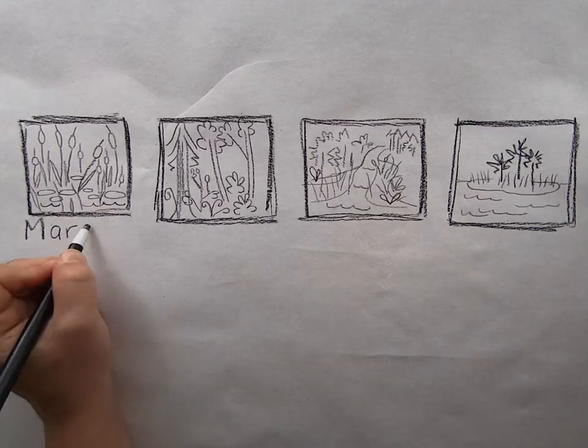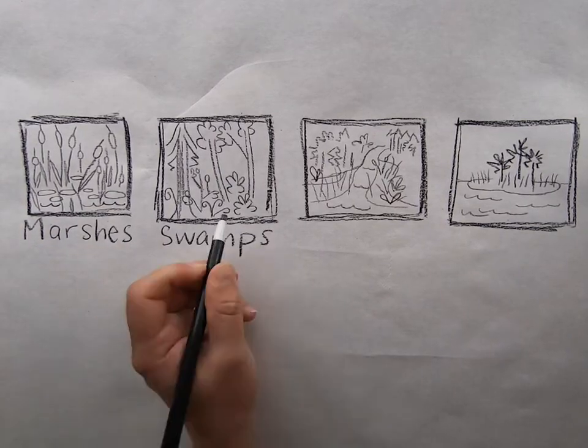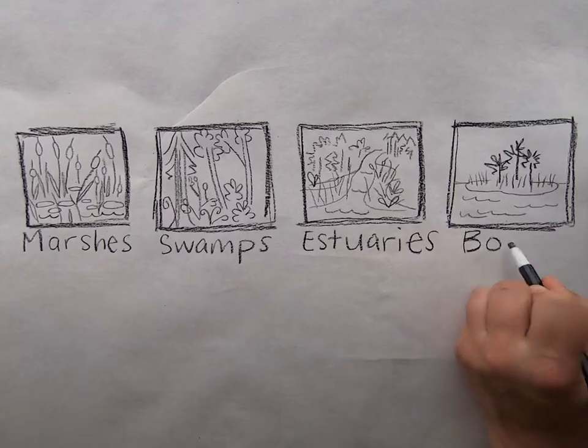Common names for wetlands include marshes, swamps, estuaries, and bogs, just to name a few.